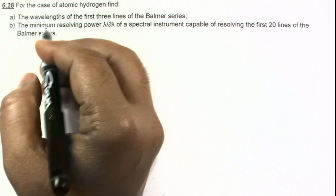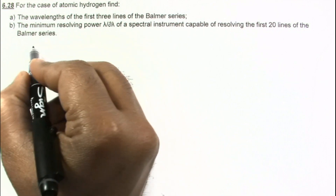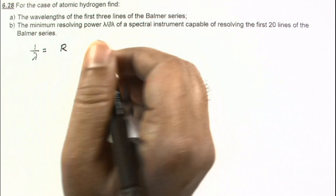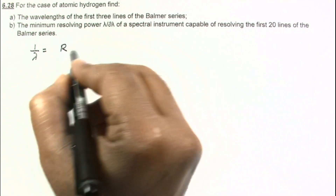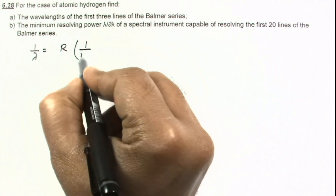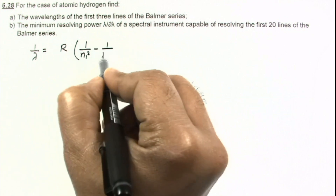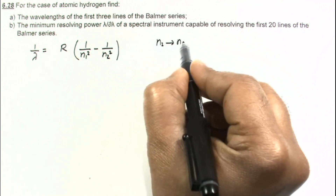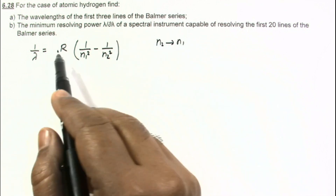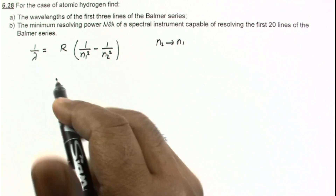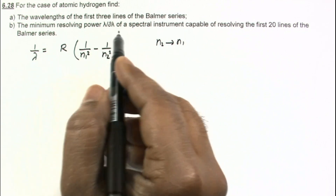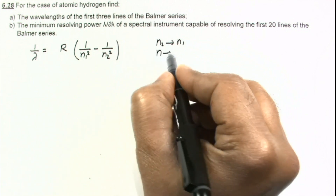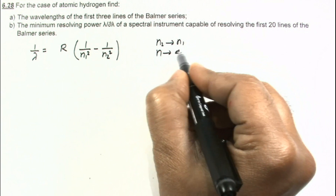For calculation of λ, we can use the equation from Bohr's model: 1/λ = R (Rydberg constant). For the hydrogen atom, we write 1/λ = R(1/n₁² − 1/n₂²) if the transition is from n₂ to n₁. For the Balmer series, the transition is from n down to 2.